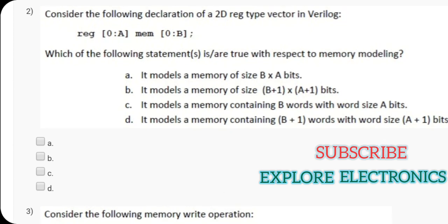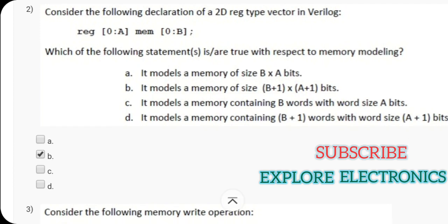Here option B is it models a memory of size B plus 1 cross A plus 1 bits. That is correct. B is correct. Why? Because 0 to A means it gives A plus 1 values. Similarly 0 to B means a vector size gives B plus 1 values. That is why B is correct and also it models a memory containing B plus 1 words with word size A plus 1 bits. That is also correct. Because a vector size will be represented in 0 to A, that is the size of the word and number of words will be represented with 0 to B after the identifier that is MEM. That is why option D is also correct.